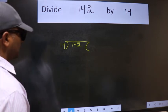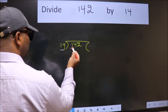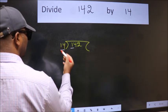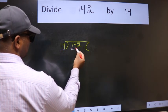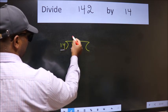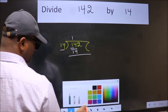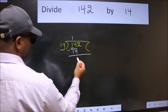Next. Here we have 1. Here 14. 1 is smaller than 14. So we should take two numbers, 14. When do we get 14 in 14 table? 14 once 14. Now we should subtract. We get 0.